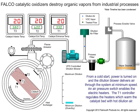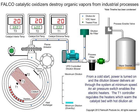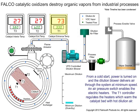From a cold start, power is turned on and the dilution blower delivers air through the system at minimum speed. An air pressure switch enables the electric heaters.